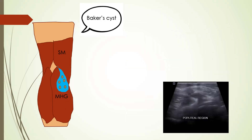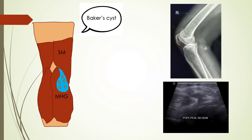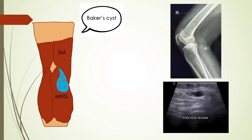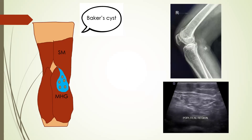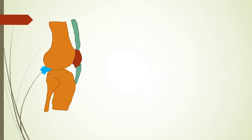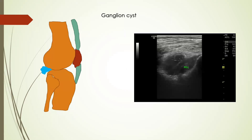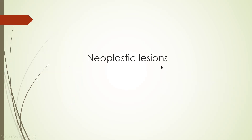Loose bodies within the Baker's cyst may be an indicator of synovial osteochondromatosis. We may also encounter a ganglion cyst in the posterior compartment or popliteal region that may have a relationship with the posterior cruciate ligament, as in this case where the ganglion cyst is seen in relation to the posterior cruciate ligament.